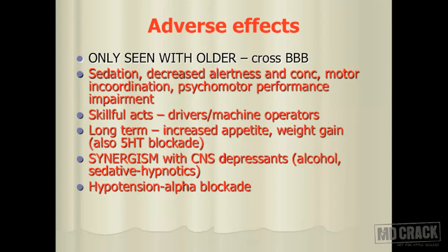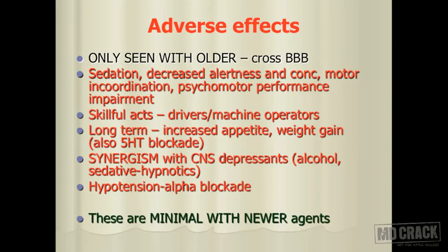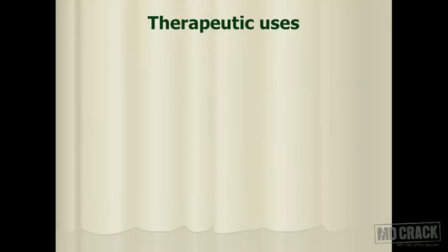Some drugs have alpha-receptor blocking capacity, so hypotension may occur. These effects are minimal with newer agents because their penetration across the blood-brain barrier is comparatively less. Older antihistamines mostly produce CNS-related effects, whereas newer agents do not cross the blood-brain barrier significantly and therefore do not produce these adverse effects.